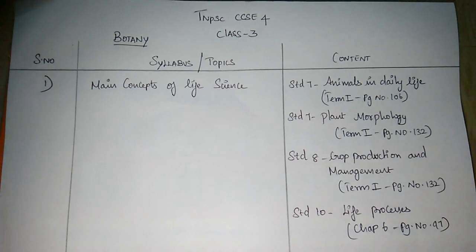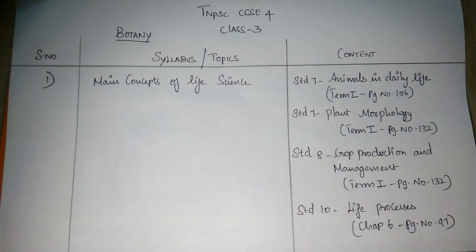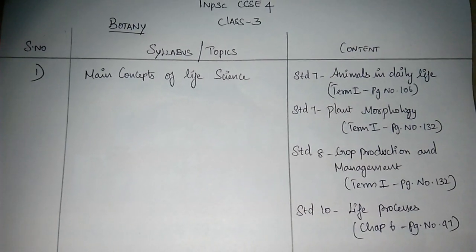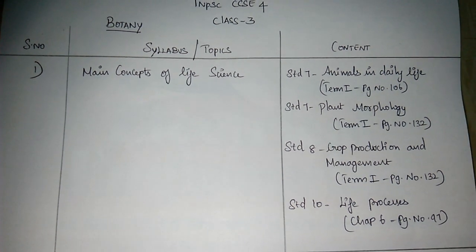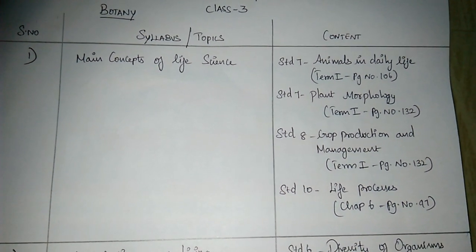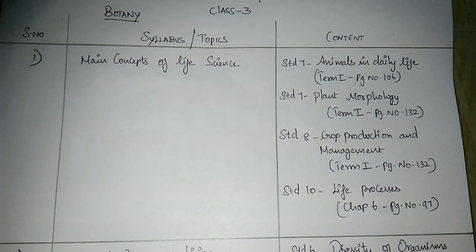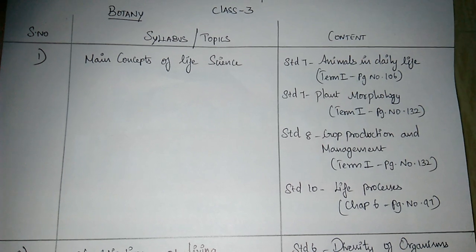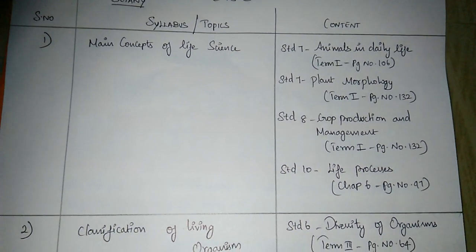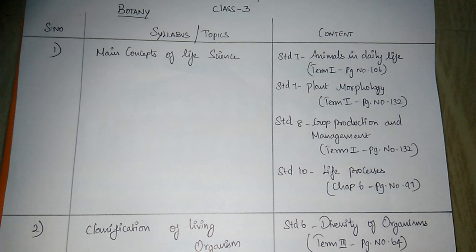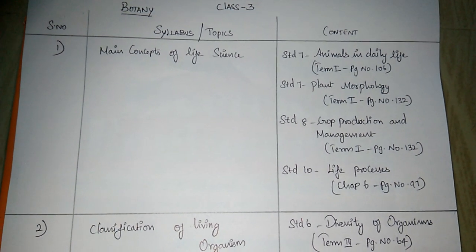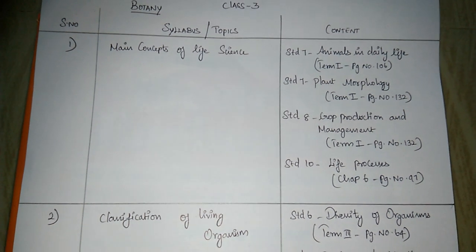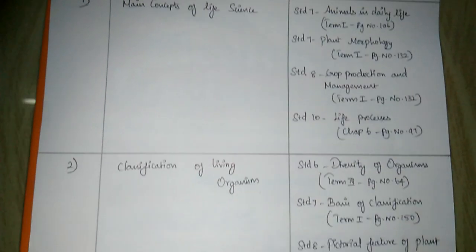Ok friends, we are going to cover the subject and concepts. First, main concepts of life science. Standard 7, animals in daily life. Standard 7, plant morphology. Standard 8, crop production and management. Standard 10, life processes, Chapter 6, page 97.